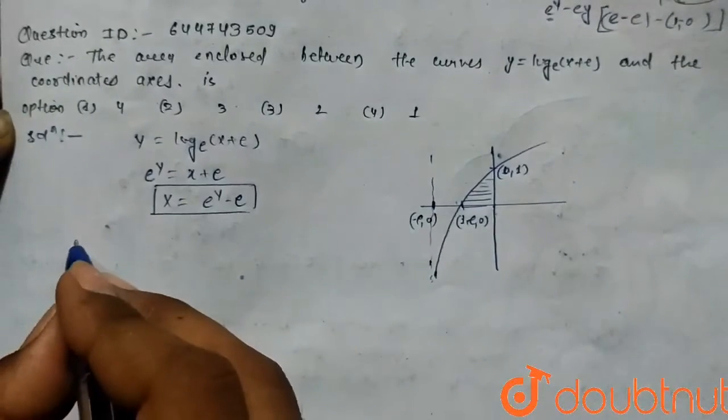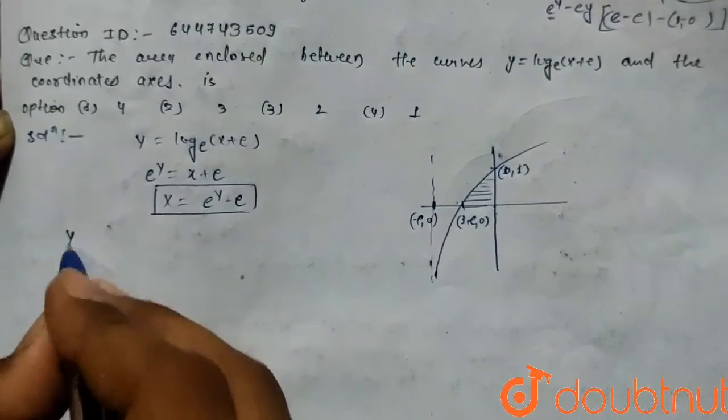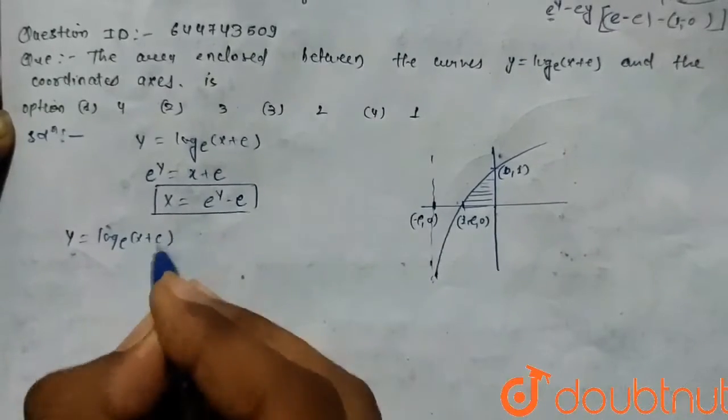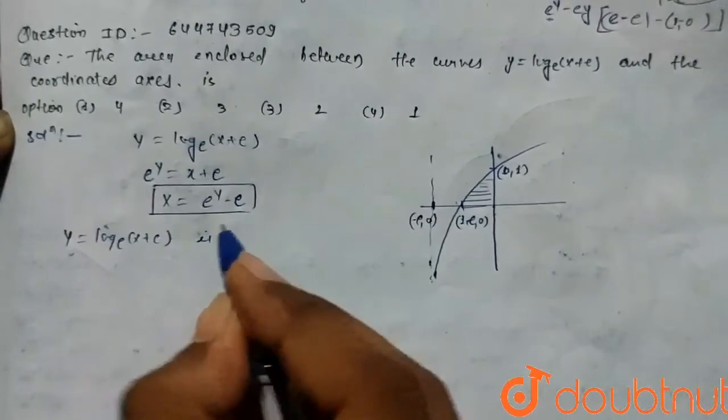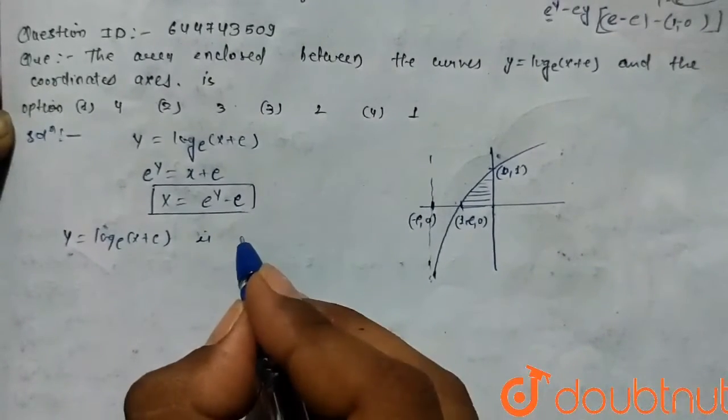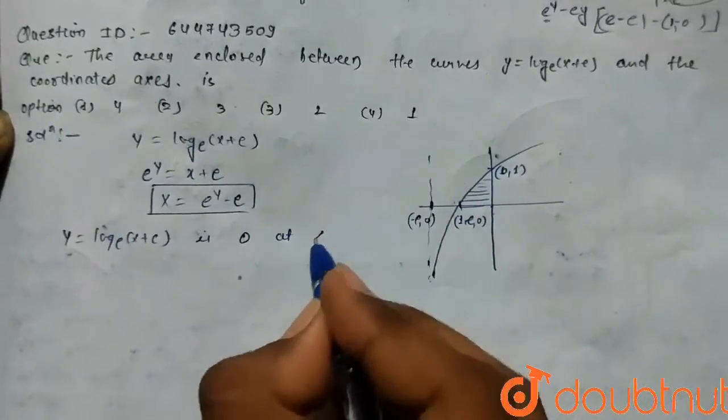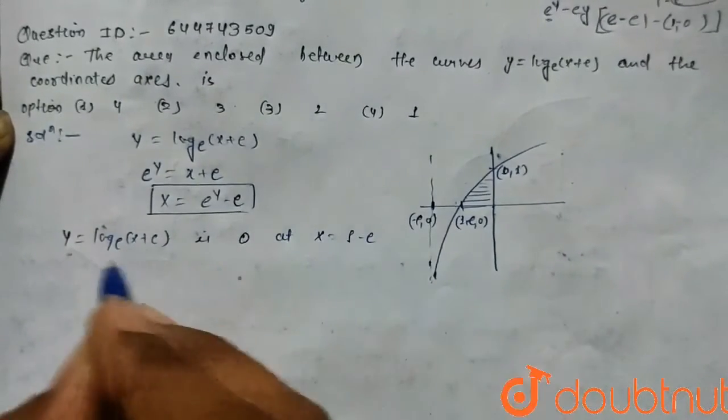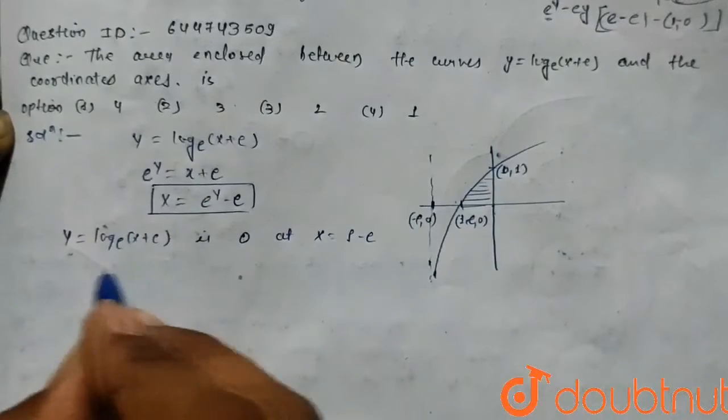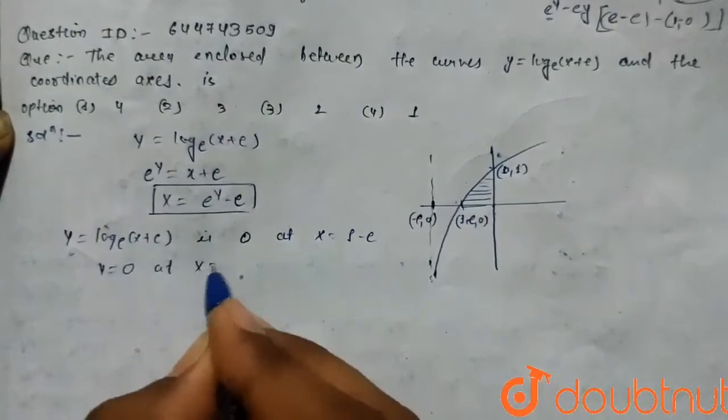For the curve y equals log(x + e), y equals zero at x equals 1-e, and y equals one at x equals zero. So the area equals the integral from zero to one of